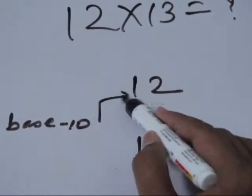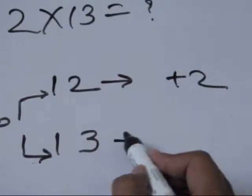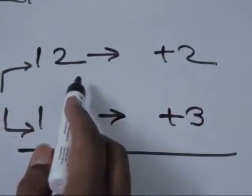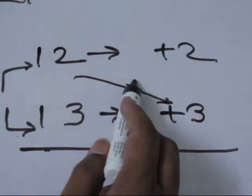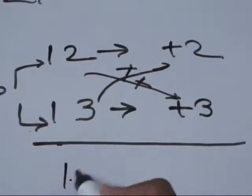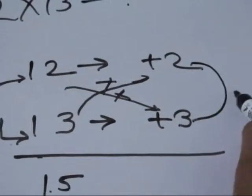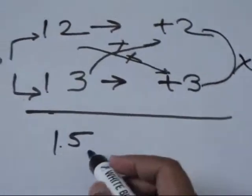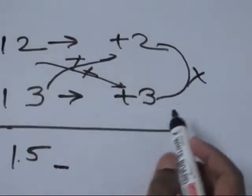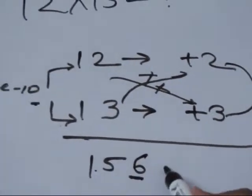See how much away from ten is twelve — it is plus two. And how much away from ten is thirteen — it is plus three. So just add the corners: add twelve with plus three. You will get the same result by adding thirteen with plus two. The addition is fifteen. Now the second step is to multiply plus two and plus three, which gives six. Base is ten, so only one place is left. Fill it with six. So the multiplication is 156.